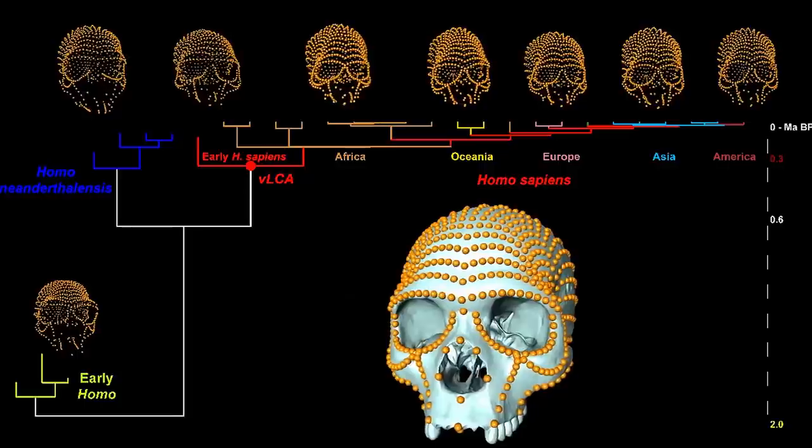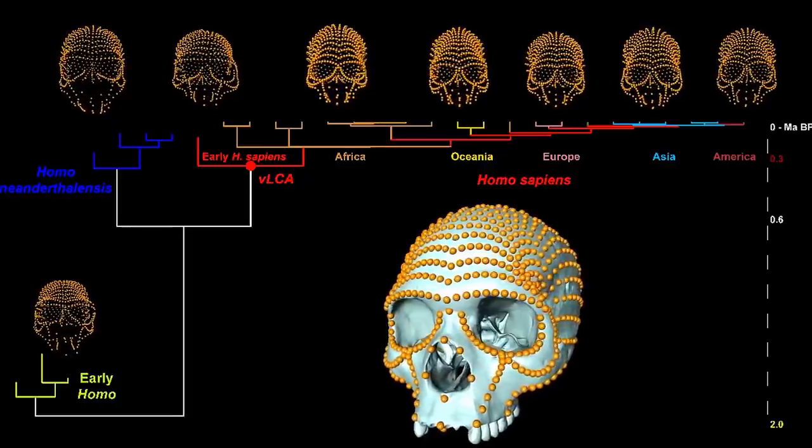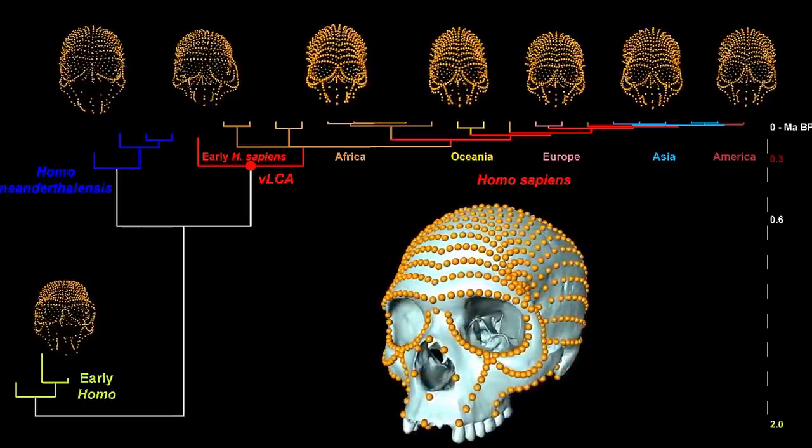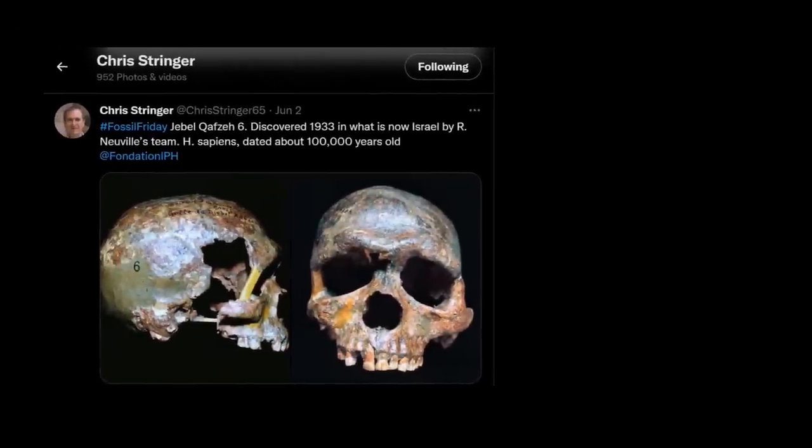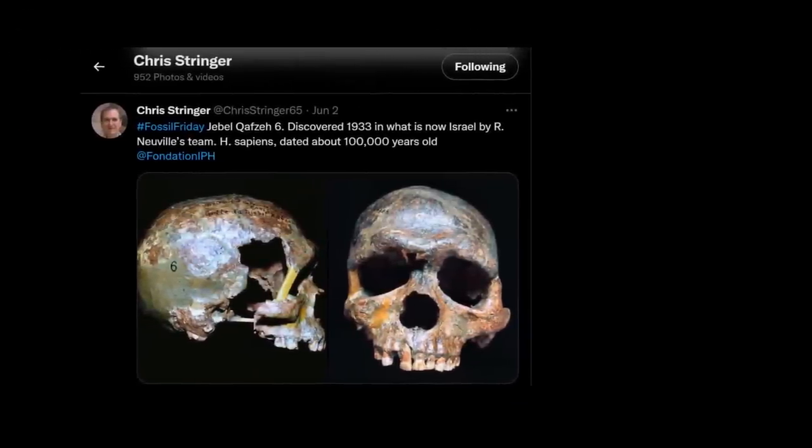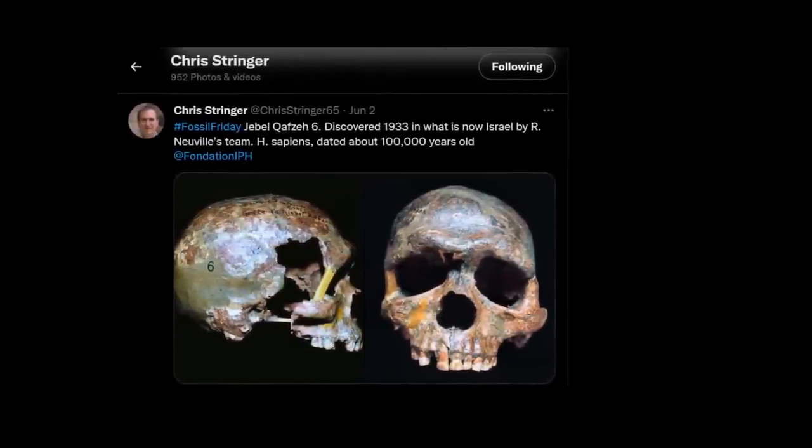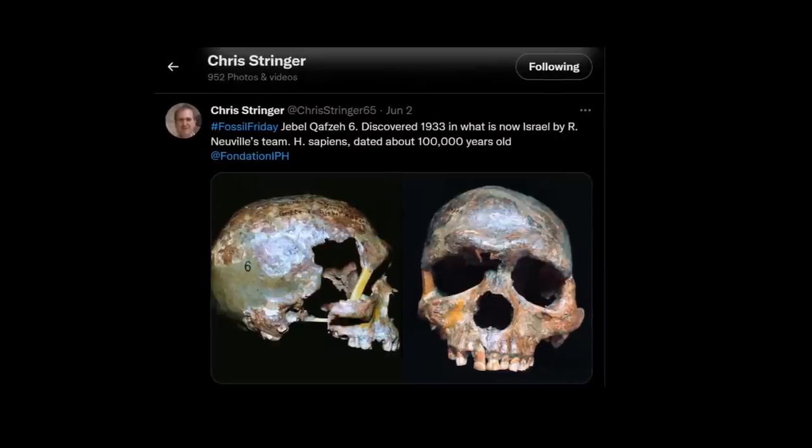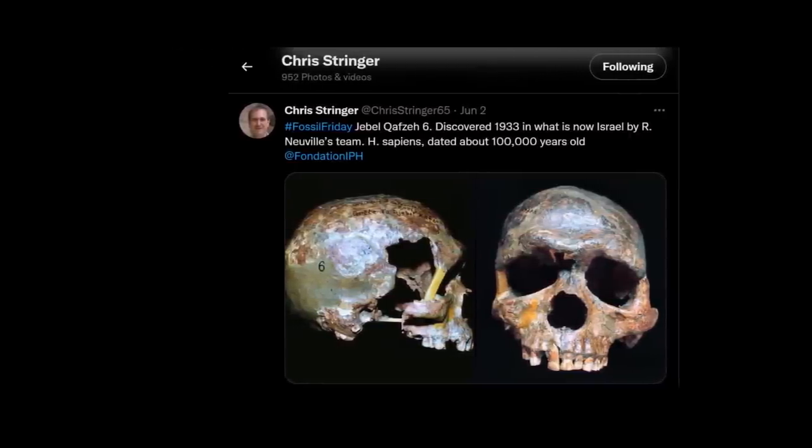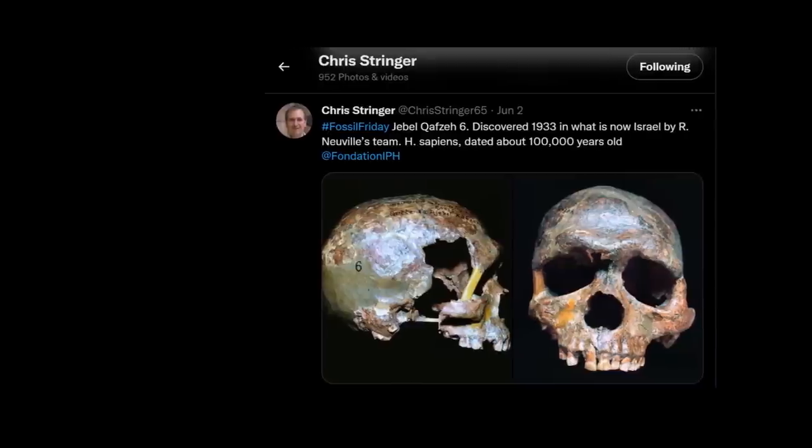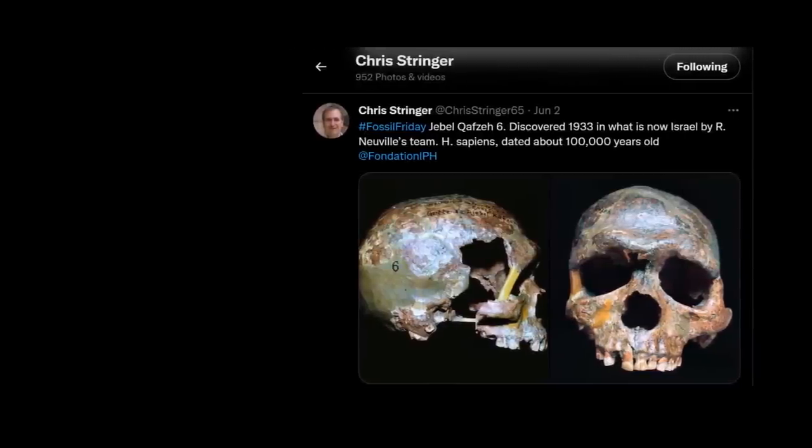Even as it becomes harder to pin down the identity of our direct ancestor, the African multiregionalism model has shifted the spotlight onto a different and, arguably, more interesting ancestor question. If, as the hypothesis suggests, the African Middle Stone Age was teeming with groups of more or less modern humans evolving semi-independently, which of these actually gave rise to the contemporary human population?